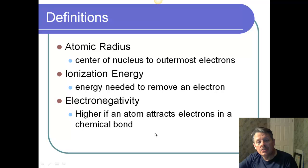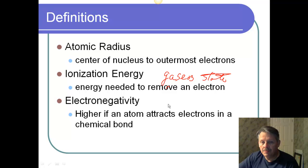Remember your definitions. Your atomic radius is the center of the nucleus to the outermost electrons. Your ionization energy is the energy needed to remove an electron. Remember, it has to be in a gaseous state. And the third thing is your electronegativity. Remember, it's just a measurement. And it's higher if an atom attracts electrons in the chemical bond.